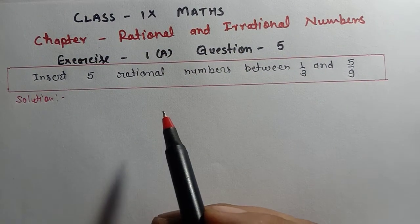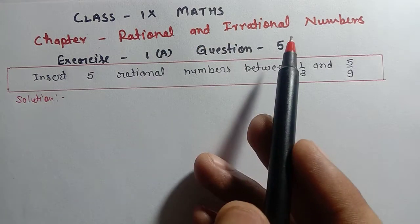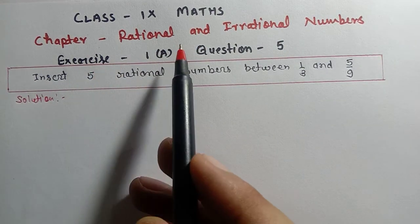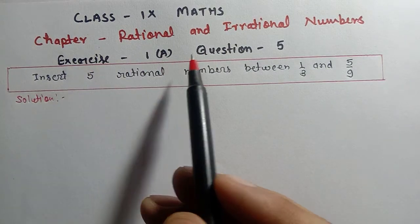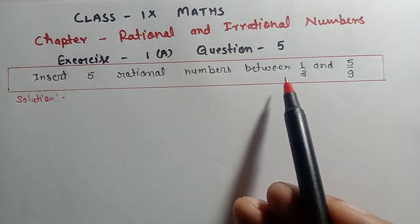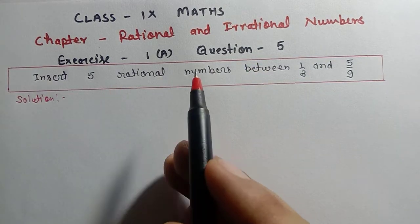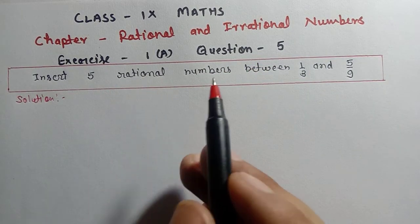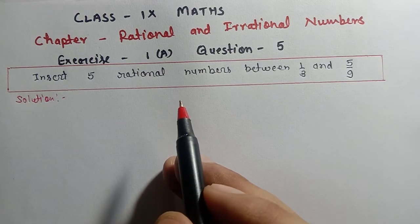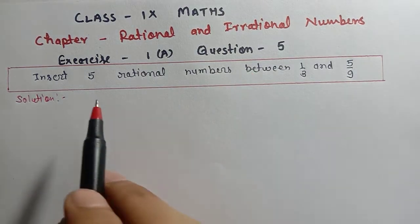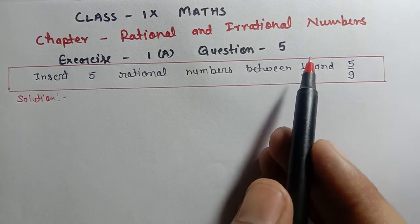Hello students, welcome to this channel. I am your maths teacher. Class 9th Maths, ICSE board, Chapter 1st: Rational and Irrational Numbers, Exercise 1A, Question 5. Questions 4, 3, 2, and 1 we have already solved, so here Question 5 is: insert 5 rational numbers between 1/3 and 5/9.